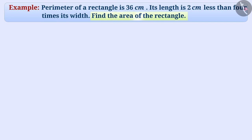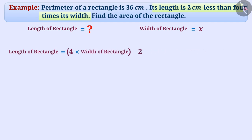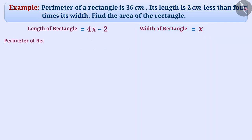To find the area of a rectangle, we have to find the length and width of the rectangle. Let us consider the width of the rectangle as x. It is known from the question that the length of a rectangle is 4 times the width and 2 cm less. Since we have considered the width as x, we can write the length of rectangle as 4x minus 2.